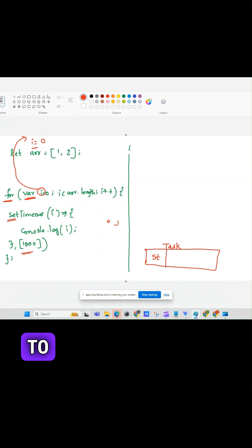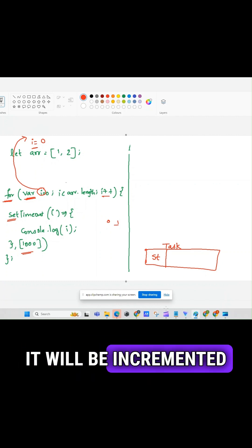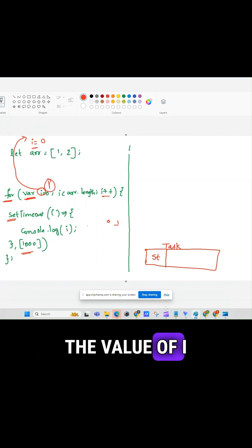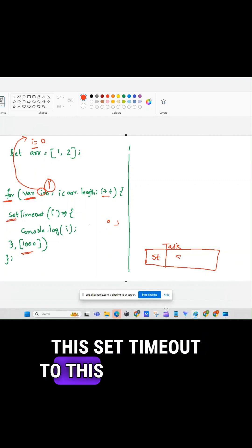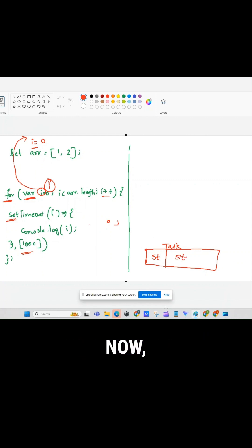So JavaScript will move to the first iteration now. So what is the value of i here? It will be incremented and it will become 1 here. The value of i will be 1 and it will encounter the set timeout again. It will move this set timeout to this task queue. Now the JavaScript engine will increase this i value. Now what is the value of i? It will become 2.